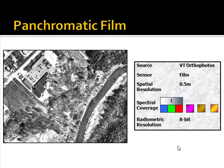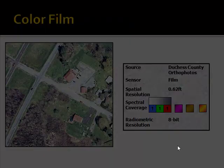Here is an example of panchromatic film — a film-based sensor that is then scanned and brought into the GIS as a digital image. This is an example of Vermont orthophotos from the 1990s. The spatial resolution is half a meter, and it's black and white because it only has one spectral band. The radiometric resolution is 8-bit, so pixels have a possible value of 0 to 255.